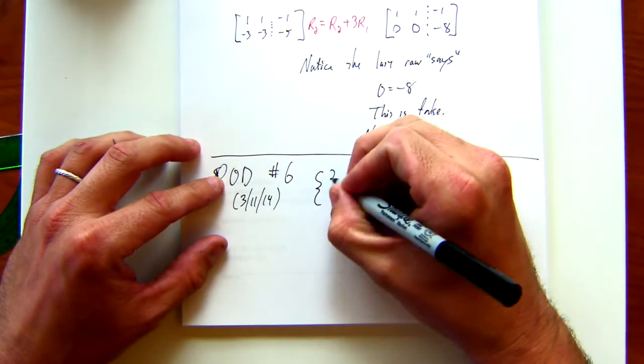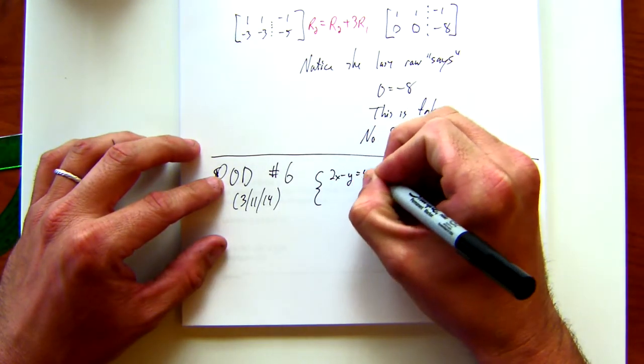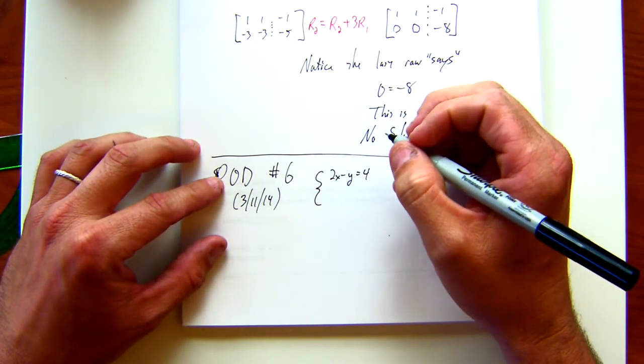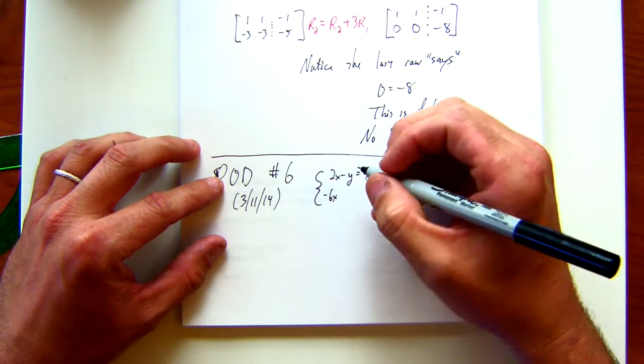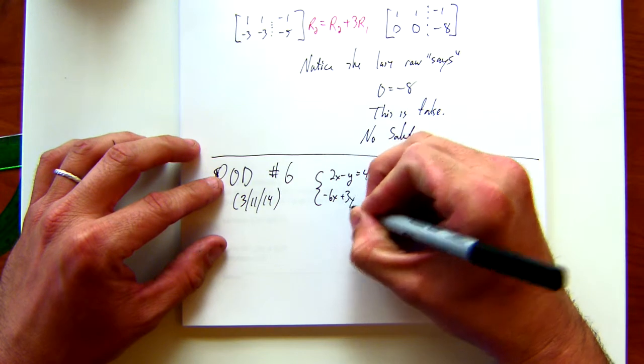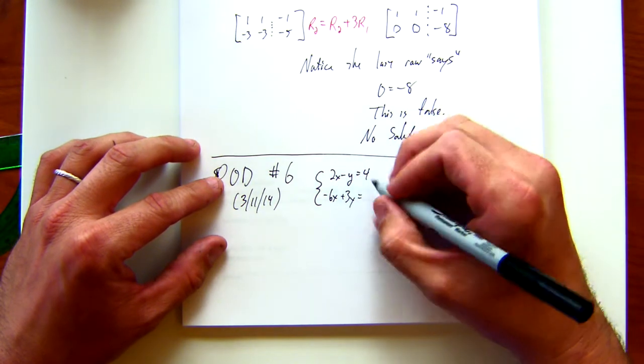Two x minus y equals four. And negative six x plus three y is equal to negative twelve.